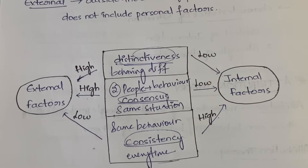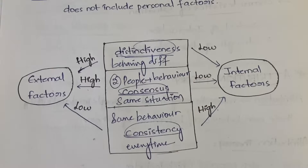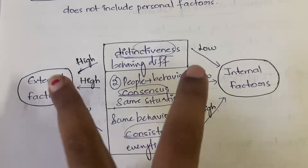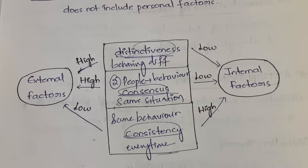This is attribution theory. The main point is the table showing distinctiveness, consensus, and consistency mapped against internal and external factors. You need to understand all these things in order to explain the table clearly. I hope this video is clear to you. In the next video I will explain about locus of control. That's all for this video — see you in the next one.